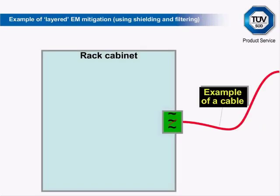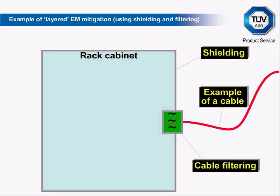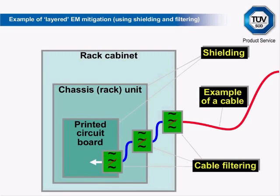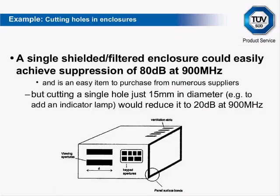An example of layered EMC mitigation uses shielding and filtering: a cable going into an equipment rack enclosure has filtering on the cable and shielding provided by the rack cabinet. The cable then passes into the chassis through a second filter, and the chassis provides additional shielding. Finally, the circuit has filtering again on the cable and a shielded enclosure around it. A single shielded filtered enclosure could easily achieve suppression of 80 dB at 900 MHz. However, cutting a single hole just 15 mm in diameter to add an indicator lamp would reduce it to 20 dB at 900 MHz. Shielding is very easily compromised by cutting holes to run cables, pipes or lamps through the enclosure, or by incorrect cable termination.